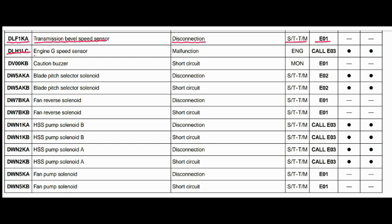Code DLH1LC. The faulty part is the engine G speed sensor, and the problem is malfunctioning. The controller related to this fault is the engine controller, and the action code is E03. Caution lamp will blink and caution buzzer will beep.